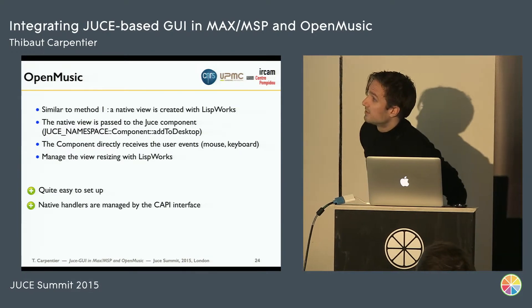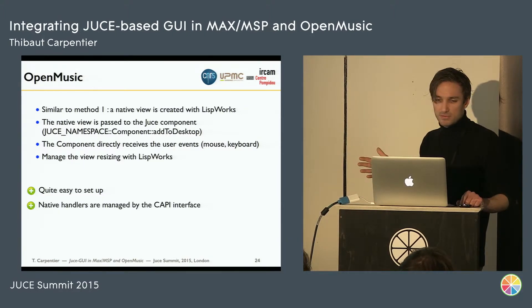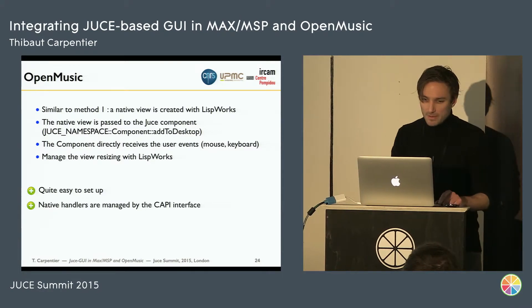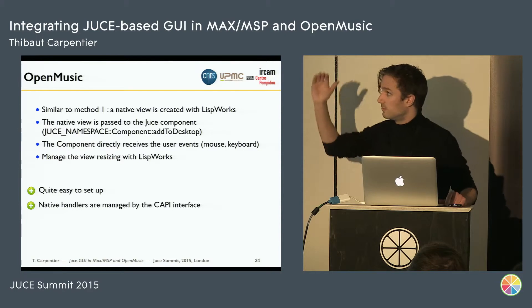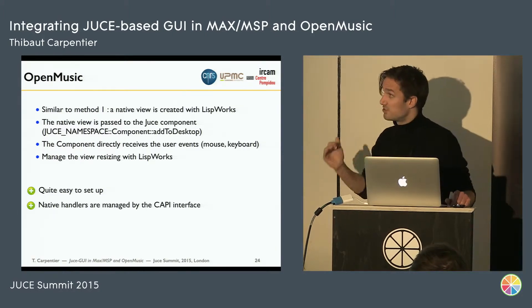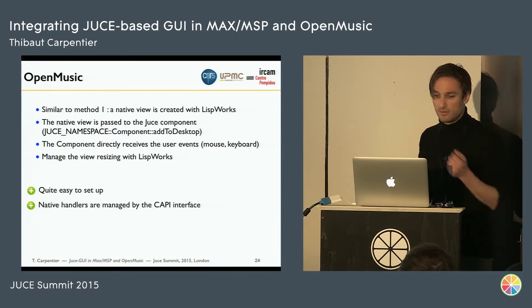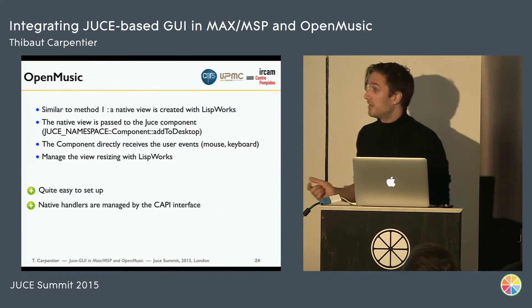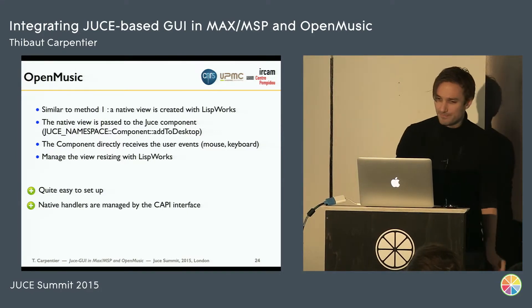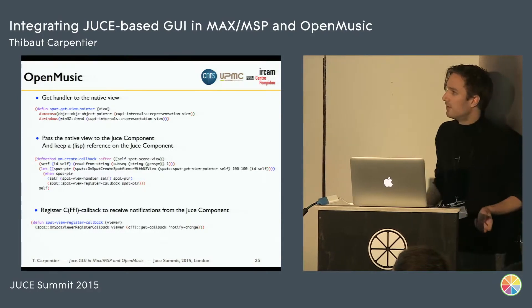For Open Music it was a pretty similar approach, except that creating the native window and obtaining a native view where we can draw our JUCE component is handled by the Lisp side of Open Music. We create the window, put the component into it, and the component gets direct access to the message loops and mouse and keyboard events. The Lisp side only needs to handle window resizing. It's basically 10 lines of Lisp code, and all the complex native parts are handled by the CAPI of Lisp.